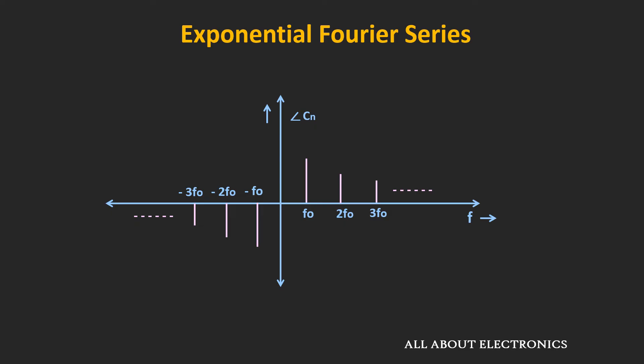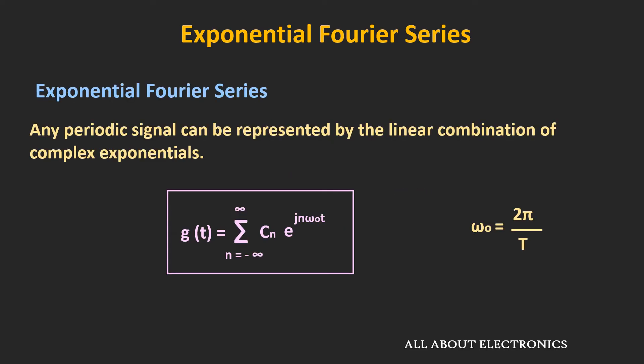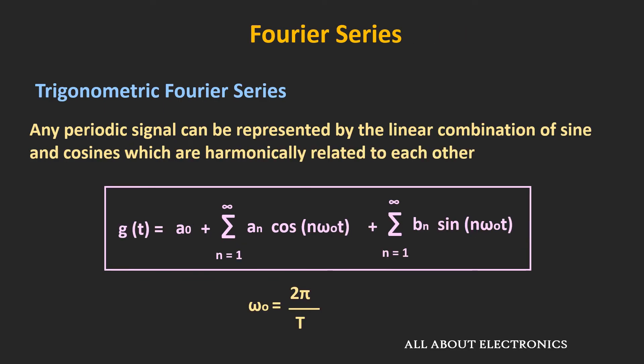So far, we have proved that complex exponentials are orthogonal signals and that for a real signal g, the coefficients Cn and C−n are complex conjugates. In the exponential Fourier series, the signal is represented by a linear combination of complex exponentials, while in the trigonometric Fourier series it is represented by sine and cosine waves. Since both represent the same signal, there must be a relationship between the two sets of Fourier series coefficients.